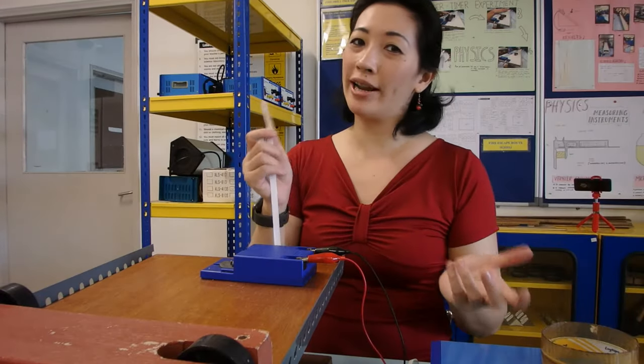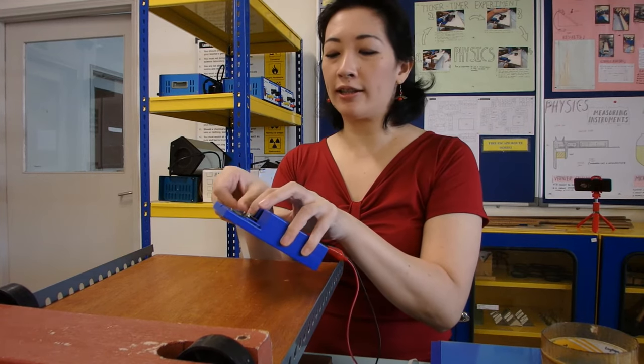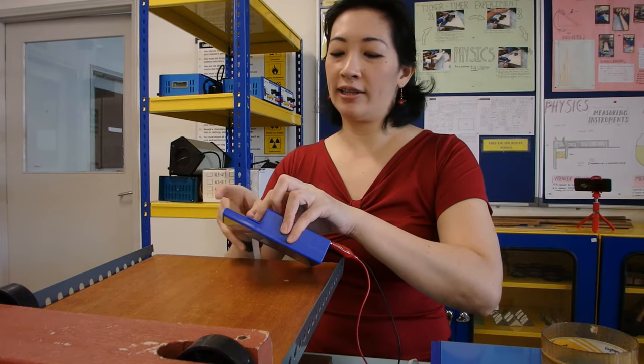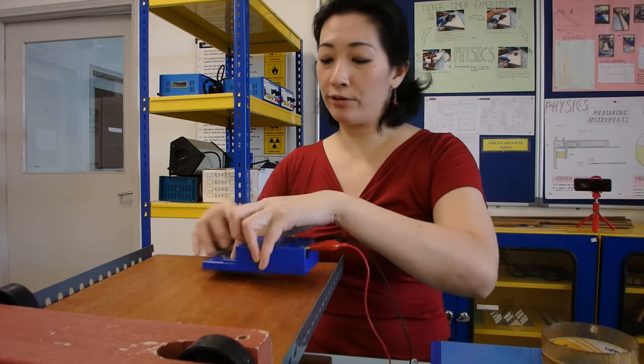Once we already have our ticker tape prepared, we're going to put it through the ticker timer through the slots as we had seen earlier. It doesn't matter whether you're coming in from one side or the other side, as long as the ticker tape can move freely through the ticker timer.